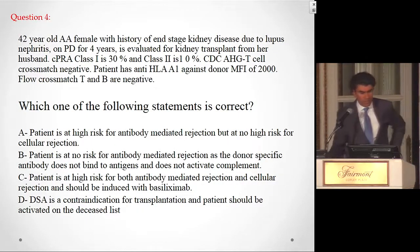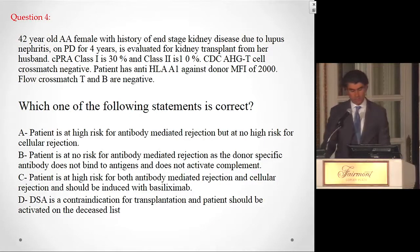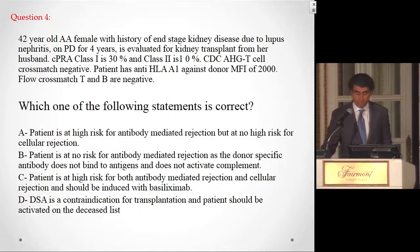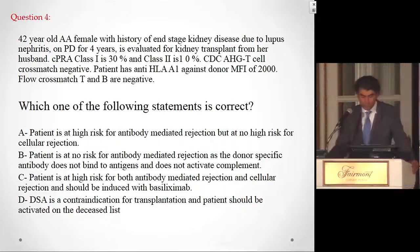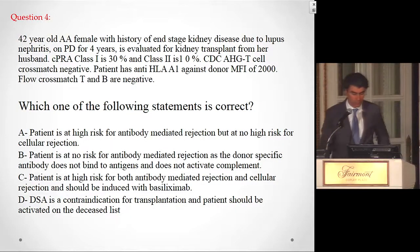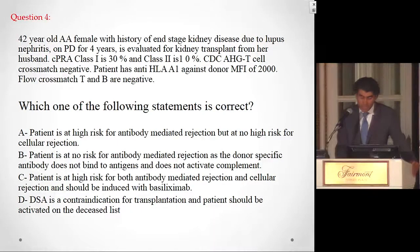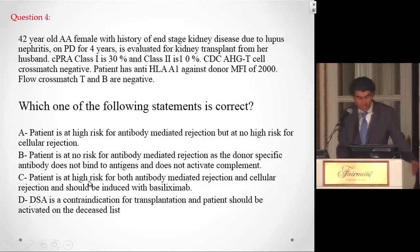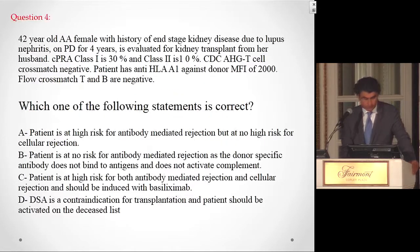Question four: A 42-year-old African-American female with ESKD due to lupus on PD for four years is evaluated for a kidney transplant from her husband. She is sensitized with CPRA class 1 at 30%, class 2 at 10%, with negative CDC T-cell cross-match. She has anti-HLA-A1 against the donor with an MFI of 2,000. Flow cross-match T and B cells are negative. Which statement is correct — is this patient at high risk for antibody-mediated rejection only, no risk since cross-match is negative, high risk for both rejection types, or is DSA a contraindication for transplant?